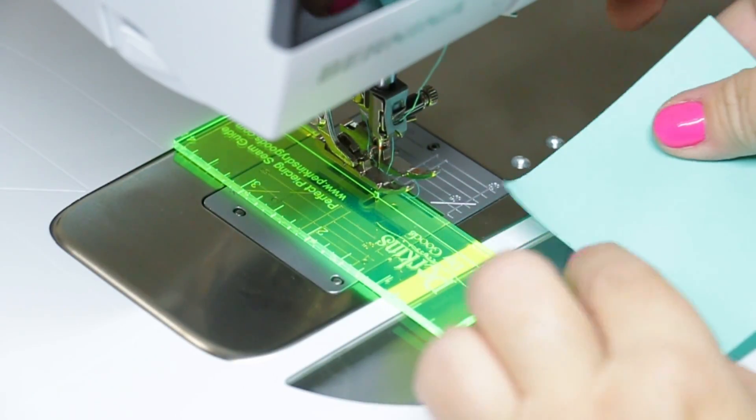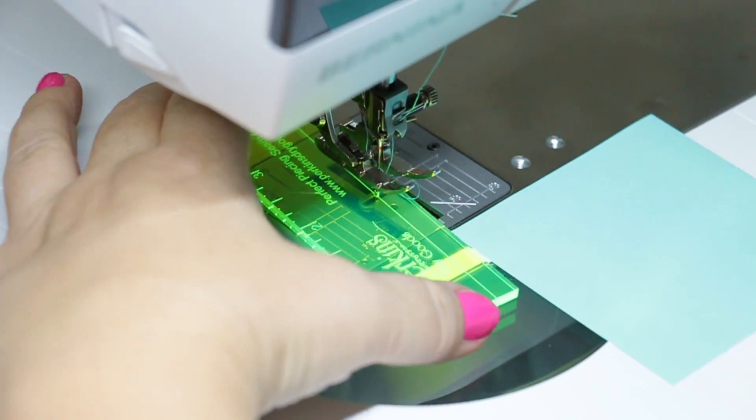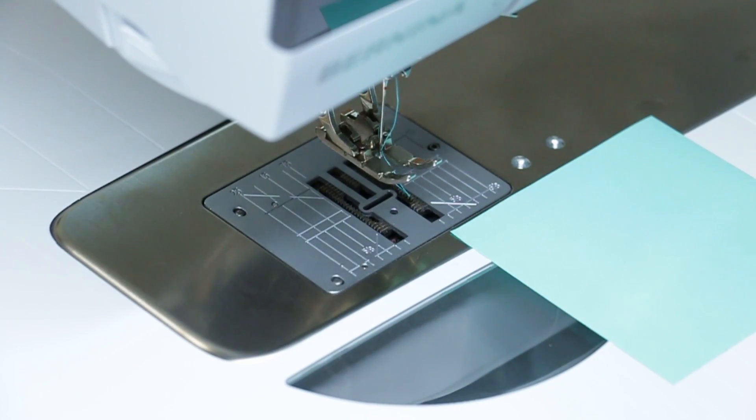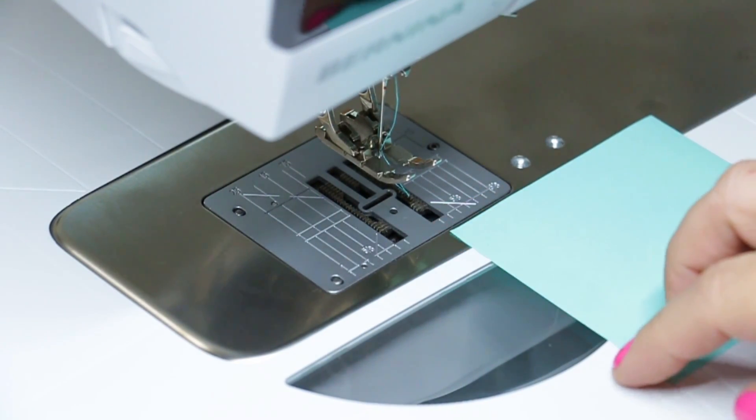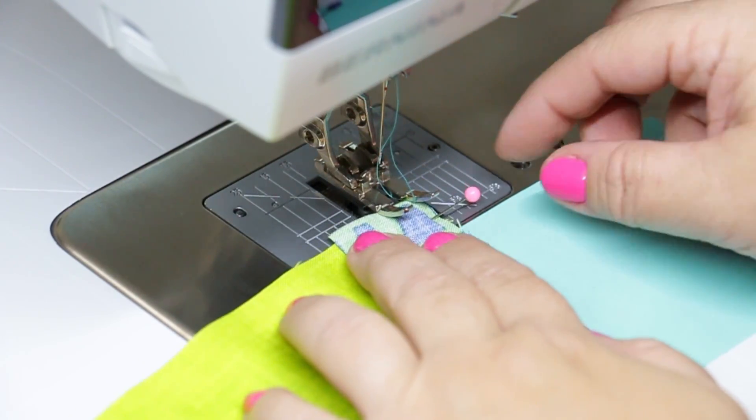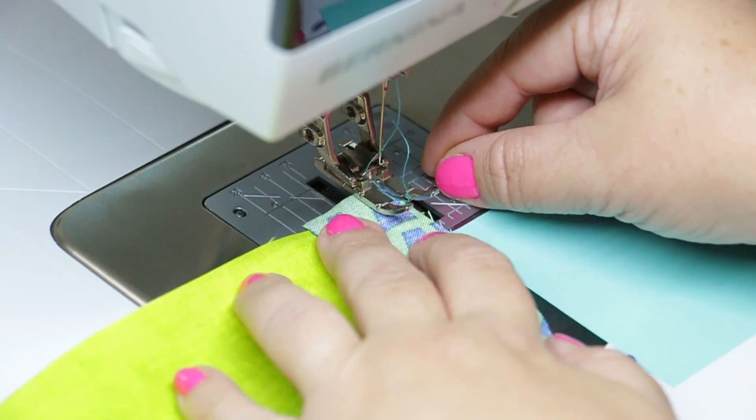In order to get the perfect scant 1/4-inch seam allowance, I use the Perfect Piecing Seam Guide. And you can learn all about that. I have the link in the description. But basically, we're going to insert the needle through the center hole and align it so that we can get that perfect scant 1/4-inch right there. And we just put a Post-it note down to hold that in place. And now we're going to go ahead and sew the entire seam using that scant 1/4-inch.